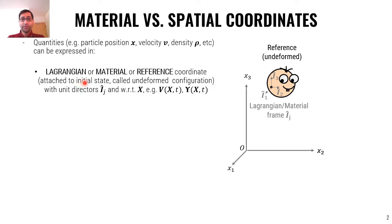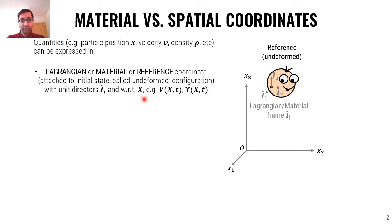One is the Lagrangian, or material, or reference coordinate. As you can see here, it is attached to the initial state, which is called the undeformed configuration. Unit vectors are capital I. Quantities are defined with respect to capital X, the initial configuration, and are shown by capital letters — for example, capital V for velocity or capital rho for density expressed in the reference coordinate.